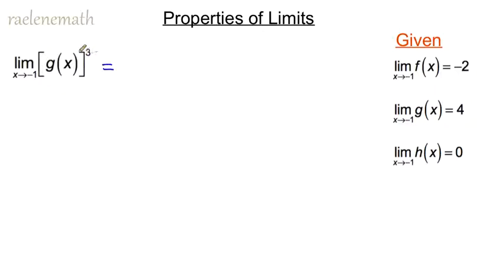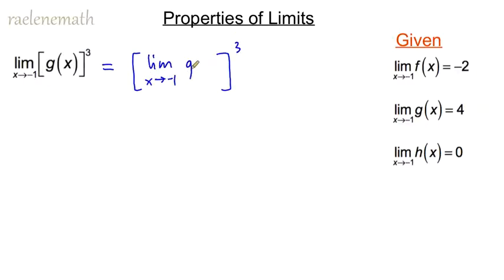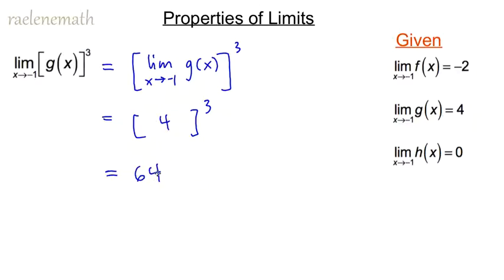In the next case, we swap the order of operations: instead of cubing g(x) first and then taking the limit, we apply the limit to g(x) first and then cube the result. Substituting the given value, we get 4 cubed, so y approaches a height of 64 on the graph of [g(x)]³.